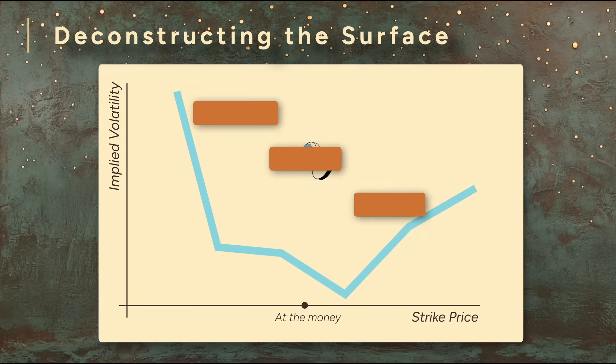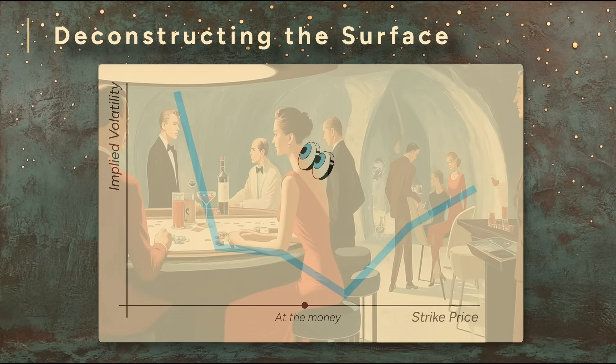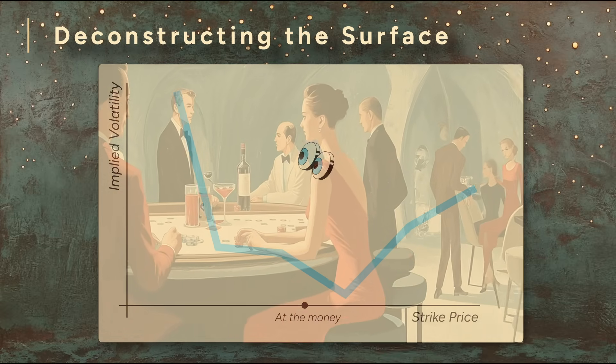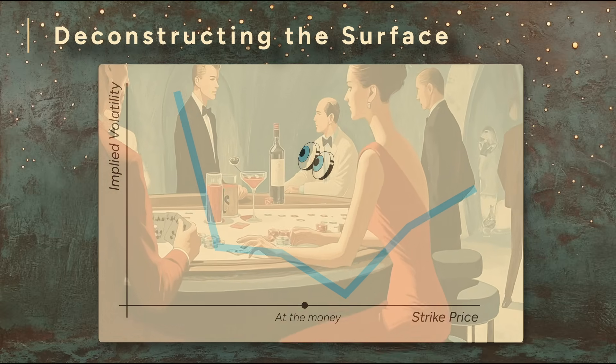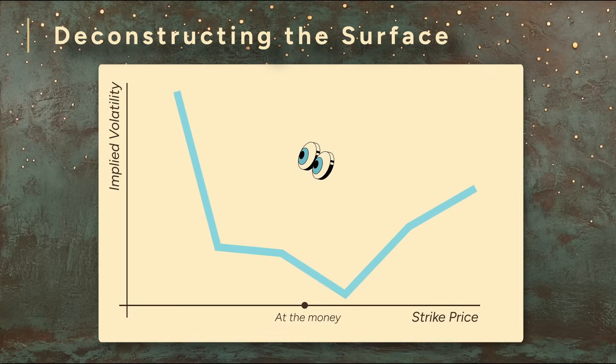But it's not just about insurance. Speculators play a role too, adding a bit of extra demand for options that could pay off big if a rare event occurs. Altogether, that's why the surface curves upward into a smile or a smirk instead of staying flat. It's the market's way of pricing in both fear and speculation.